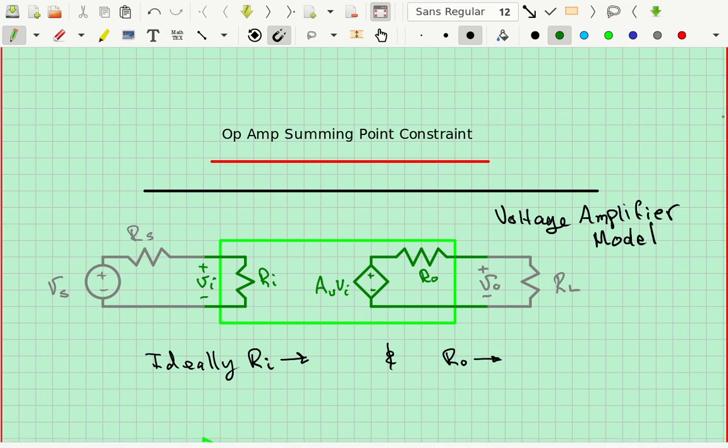So let's look first at the input. We'd like to make the input voltage VI as big as possible. The VS and the RS represent the circuit that someone would hook up to this amplifier. We don't really have control of that if we're the ones designing the amplifier. What we'd really like is the voltage VI to be as close to VS as possible.